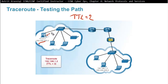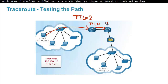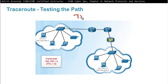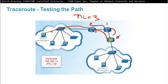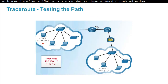Then the device increases TTL to 2; the first router reduces it to 1, the second router reduces it to zero and sends a Time Exceeded message. Then TTL is set to 3, and so on — each increment reveals the next hop along the path. This is how traceroute builds a map of the route the packets are taking to the destination.